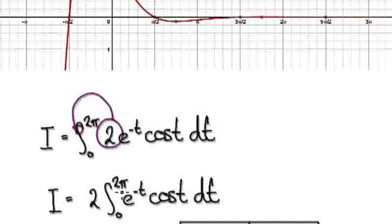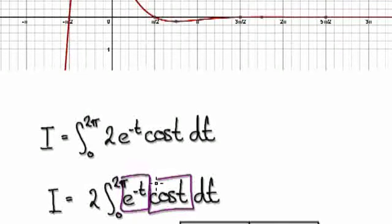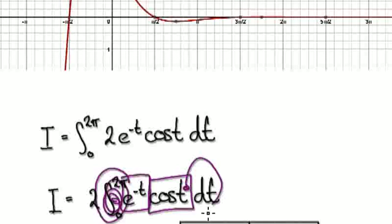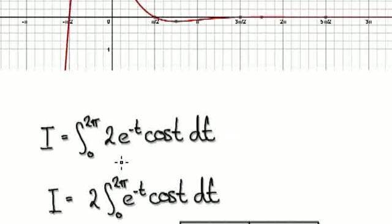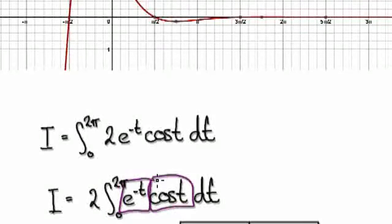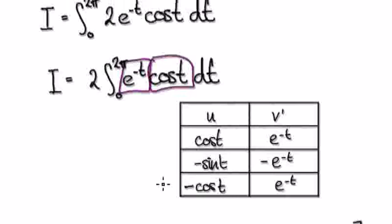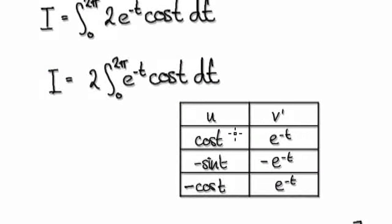From here, hopefully you can recognize that you need to use integration by parts. The thing is, when you use integration by parts, this term is just going to go round and round in circles. So you have a scenario where you let capital I equal the integral, and then you get capital I appearing again, and you merge the two together. Rather than using integration by parts several times, we jump to the table method.